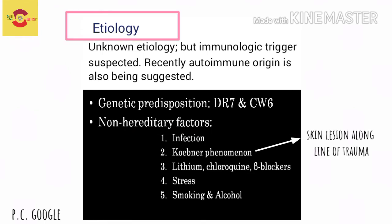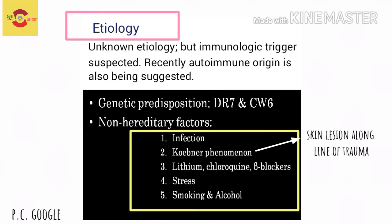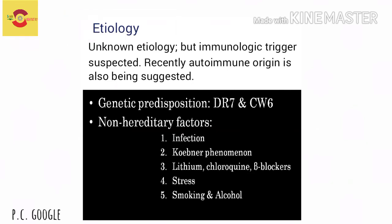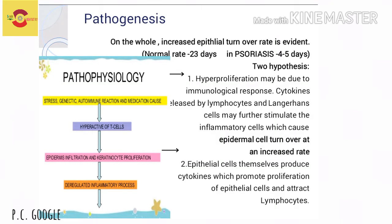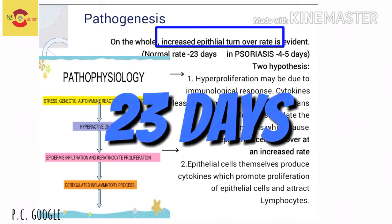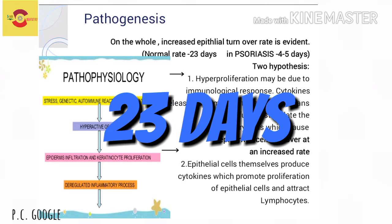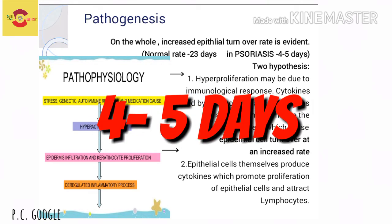Other non-hereditary factors responsible include infection, Koebner's phenomenon, lithium, chloroquine, beta blocker drugs, stress, smoking, and alcohol. In psoriasis, there is an increased epithelial turnover rate — normally 23 days, but in psoriasis it is reduced to four to five days.